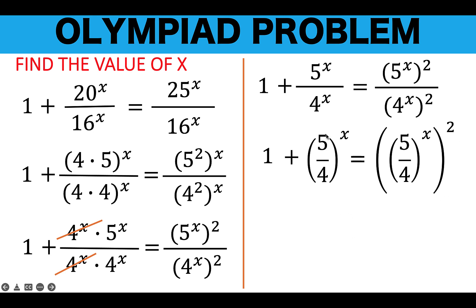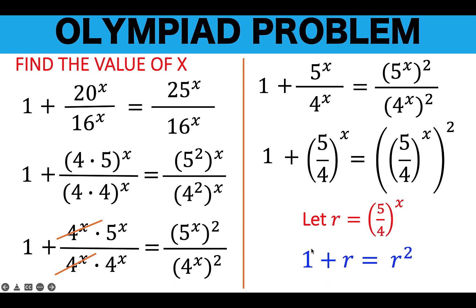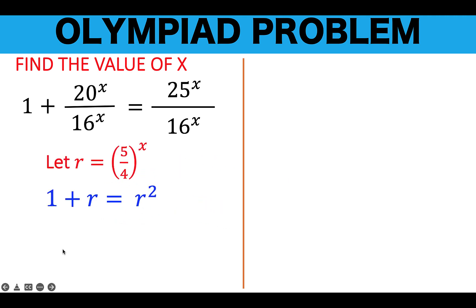Now, let the quantity 5 over 4 raised to x be equal to a variable r. Then the right side equals r squared. So this equation can be written as: 1 plus r equals r squared. This last equation is a quadratic equation. Solving for r, we write it in standard form with the right side equal to 0, and then apply the quadratic formula.